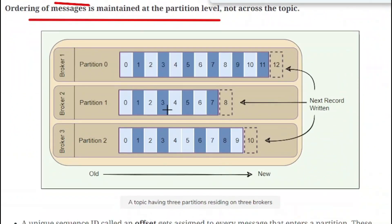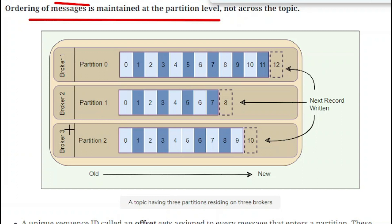You can see from this diagram: there are a total of 3 brokers. In broker 1 we have partition 0, in broker 2 we have partition 1, and in broker 3 we have partition 2. The next record retained here is the 8th, here it is the 10th, and here it is the 12th — ordered from old to new. Messages get published in sequential order on each partition present in the different brokers: broker 1, 2, and 3.